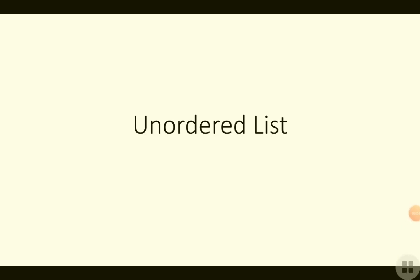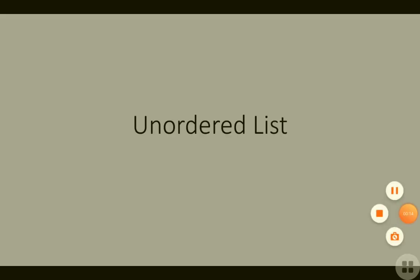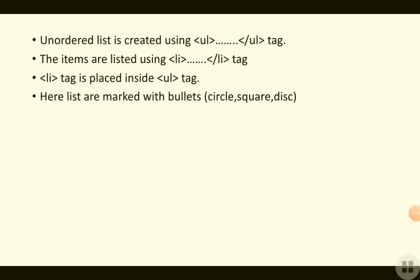Today we are going to learn about unordered lists. In our last video we studied ordered lists. Ordered lists and unordered lists are part of the Class 12 standard syllabus. Unordered lists are created using the UL tag, and the items are listed using the LI tag, which is placed inside the UL tag. In ordered lists, items were listed using alphabets, numbers, or Roman letters, but in unordered lists, items are listed using bullets.